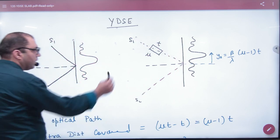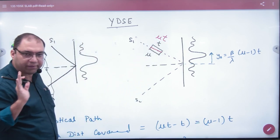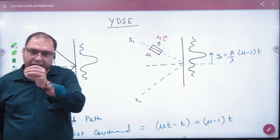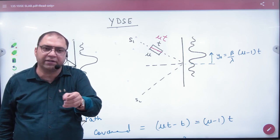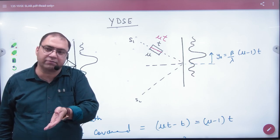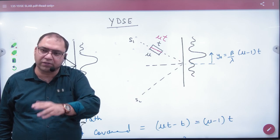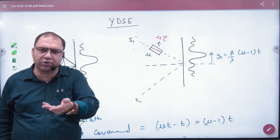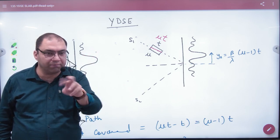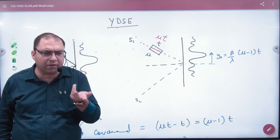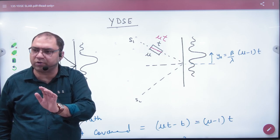One thing to note: with a glass slab of thickness T, whatever light travels through air or vacuum, it covers distance T directly. But with refractive index Mu, the vacuum-equivalent distance is Mu × T. So the extra distance covered due to the glass slab compared to air is (Mu − 1) × T. If the slab were vacuum, Mu would be 1, giving zero extra distance. So the extra distance comes from the light traveling through the glass slab.